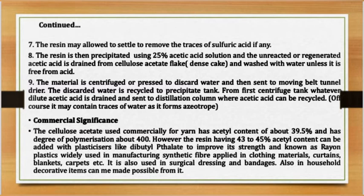Step nine: the material is centrifuged or pressed to discard water and then sent to a moving-belt tunnel drier. The discarded water is recycled to the precipitation tank. Any dilute acetic acid drained from the first centrifuge tank is sent to a distillation column where acetic acid can be recycled, though it may contain traces of water as it forms an azeotrope.